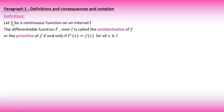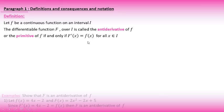Definition: Let f be a continuous function over an interval I. The differentiable function capital F(x) over I is called the antiderivative of small f(x) if and only if the derivative of capital F(x) equals small f(x). Capital F is called the antiderivative or primitive of small f, if and only if its derivative equals small f(x).